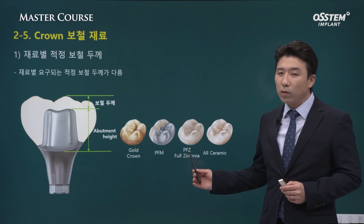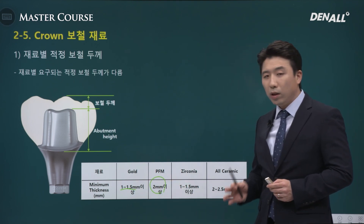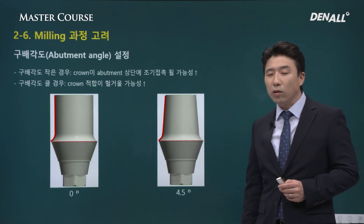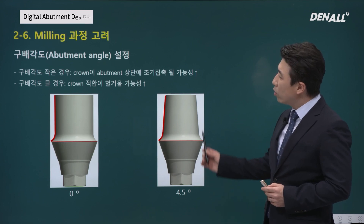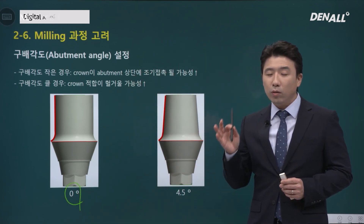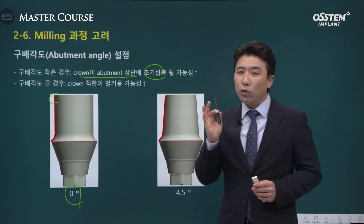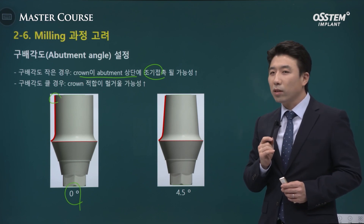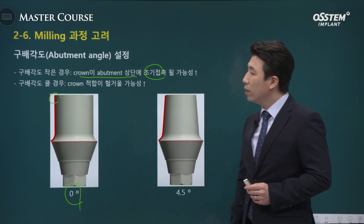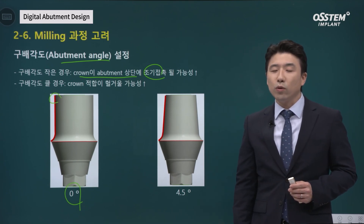Regarding thickness by different materials: for gold, it is 1–1.5 mm; for PFM with porcelain occlusion, it requires 2 mm; for zirconia, it is 1–1.5 mm or over. You need to be aware of the thickness requirements for different materials. We also need to look at the angle of the abutment. The issue with zero degrees is that the crown hits the top of the abutment and does not seat, so there is significant risk. No matter how much retention you want, zero degrees may not be a good option. The abutment angle itself plays an important role in retention.